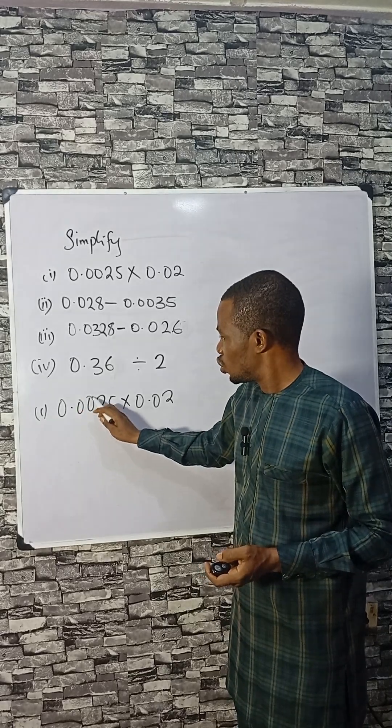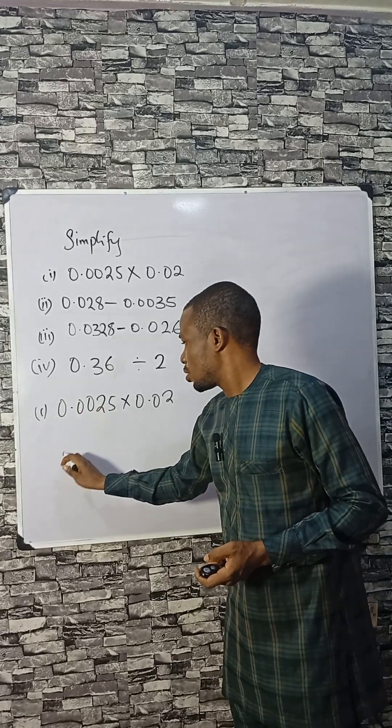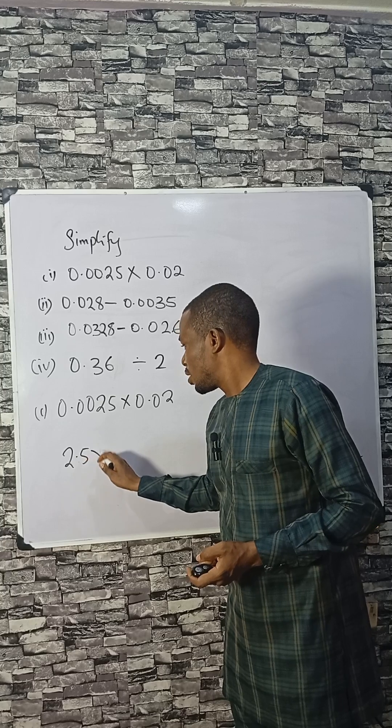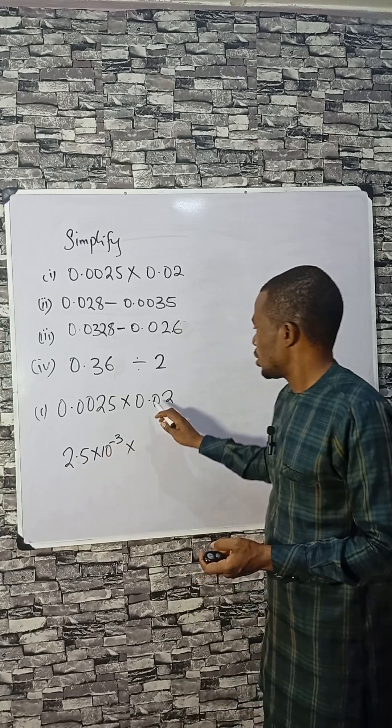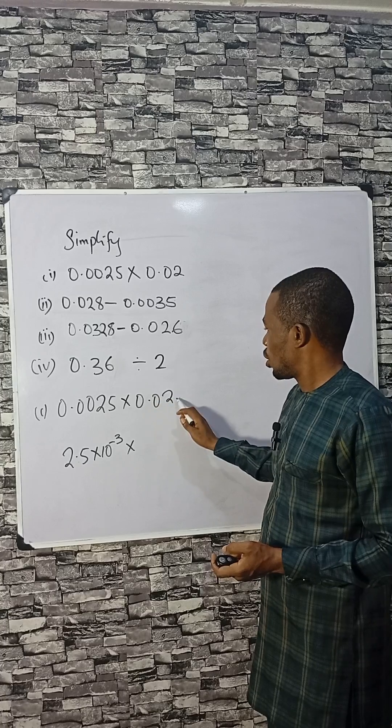One, two, three - three places. That is 2.5 times 10 raised by minus 3. Then here, one and two, that is 2.0 times 10 raised by minus 2.